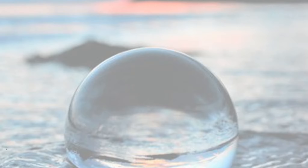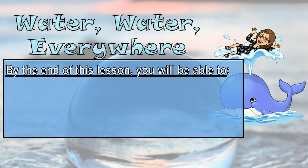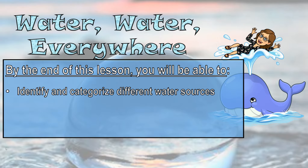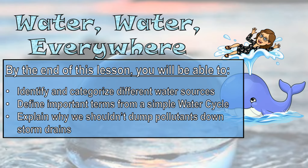Welcome to topic 6.1. In this introduction video called 'Water Water Everywhere,' you will be able to identify and categorize different water sources, define important terms from a simple water cycle — a water cycle shows you how water is moving around the planet — and finally explain why we shouldn't dump pollutants down storm drains.